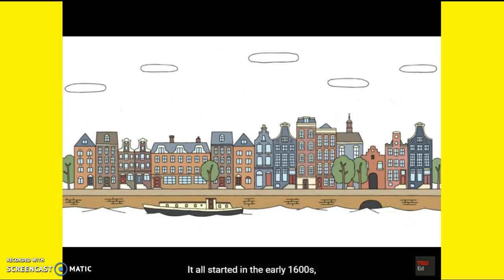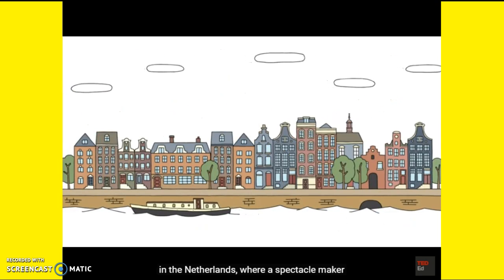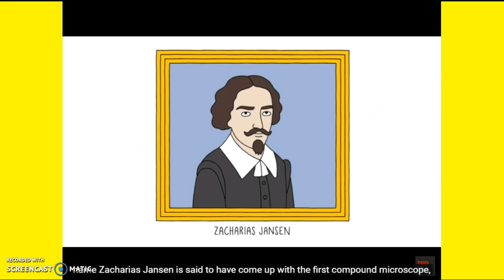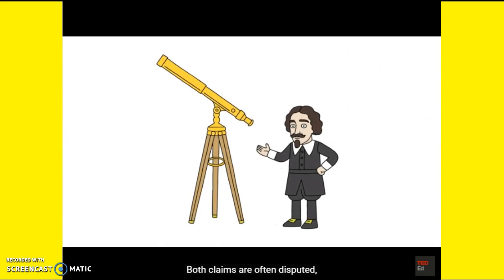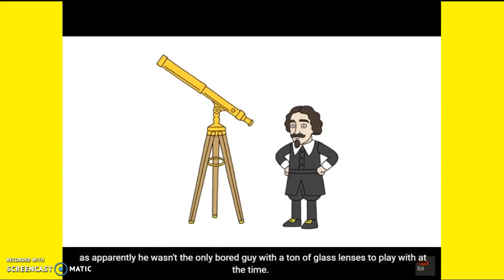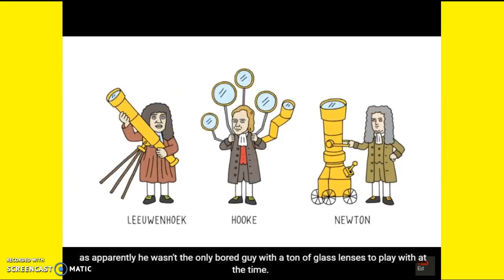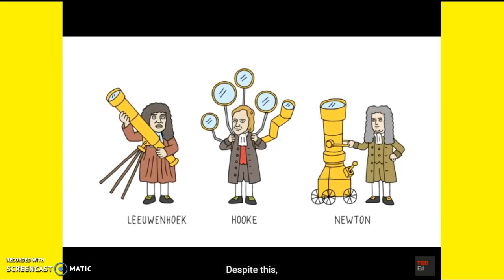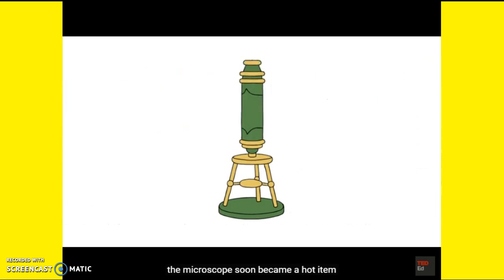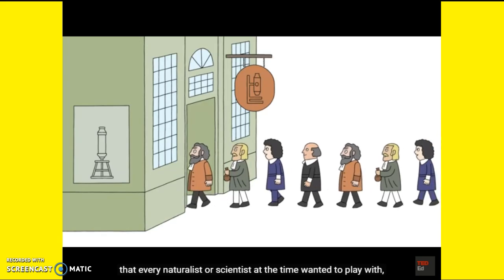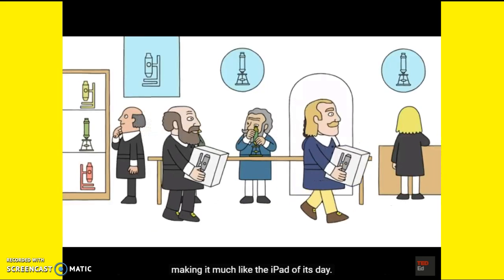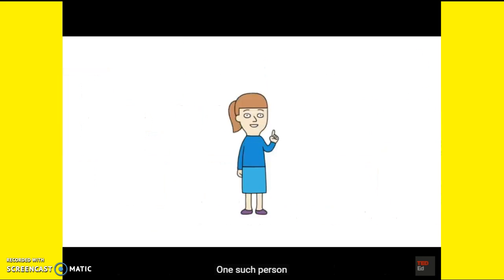It all started in the early 1600s in the Netherlands, where a spectacle maker named Zacharias Janssen is said to have come up with the first compound microscope, along with the first telescope. Both claims are often disputed, as apparently he wasn't the only person with a ton of glass lenses to play with at the time. Despite this, the microscope soon became a hot item that every naturalist or scientist wanted to play with — making it much like the iPad of its day.